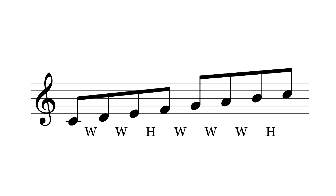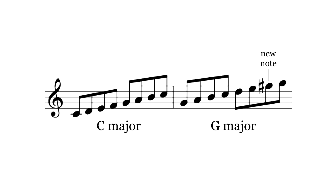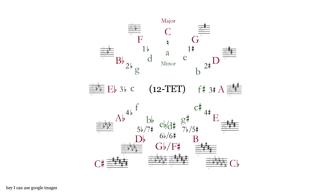It has fairly consistent step sizes. It has many consonant chords, but one very interesting thing about the major scale is that if you transpose it up a fifth, a single note changes. This is the basis for the circle of fifths, which governs how different keys relate to each other.